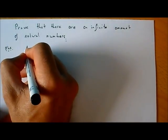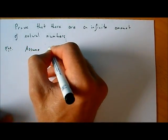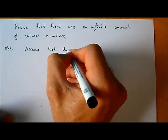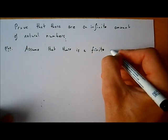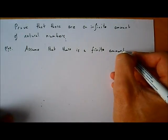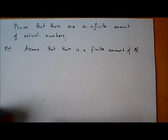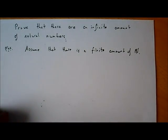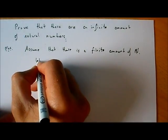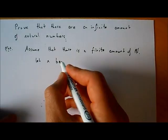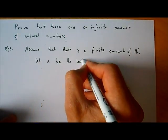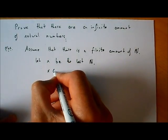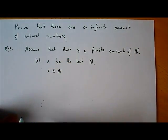We'll assume the opposite: that there is a finite amount of natural numbers. If there is a finite amount of natural numbers, that means there must be a last one. So we'll let X be the last natural number, where X is a natural number.